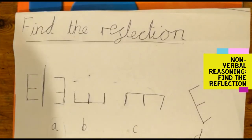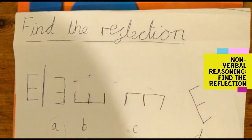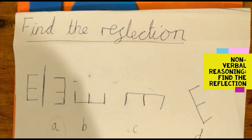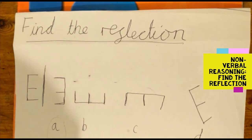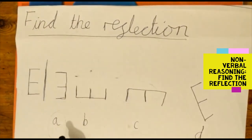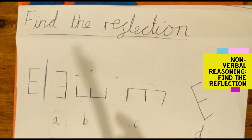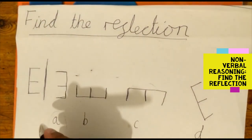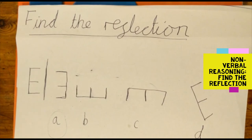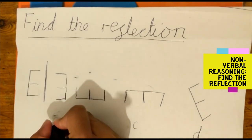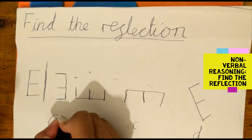Find a reflection. As we have an E facing right, we have to find the opposite of right. The opposite of right is left, so we have to find an E facing left. The first E is facing left, so the first one has to be the answer — you can circle the first one.